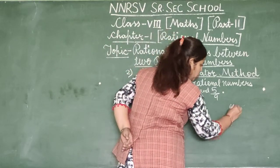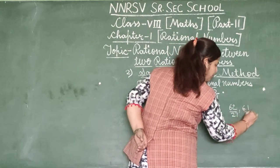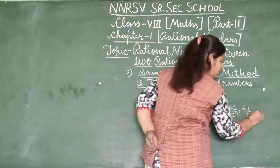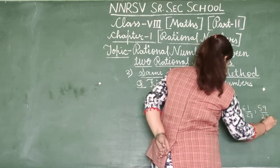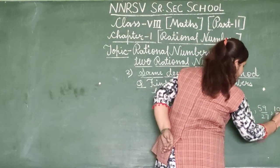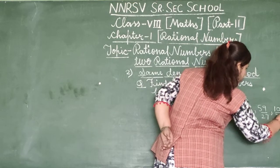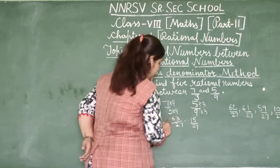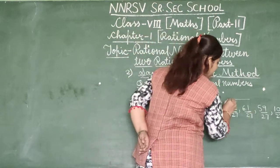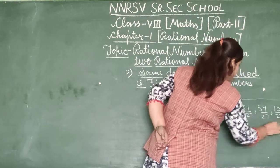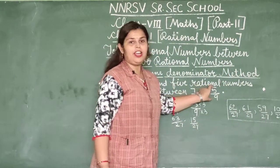Between 63/27 and 15/27, we can write: 62/27, 61/27, 59/27, 16/27 — any five numbers between 63 and 15 with denominator 27. These five numbers lie between 7/3 and 5/9.